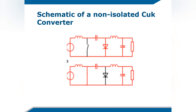Here we have the schematic of a non-isolated choke converter. There we can see two inductors, a diode and two capacitors, the voltage source and the resistor as the load.